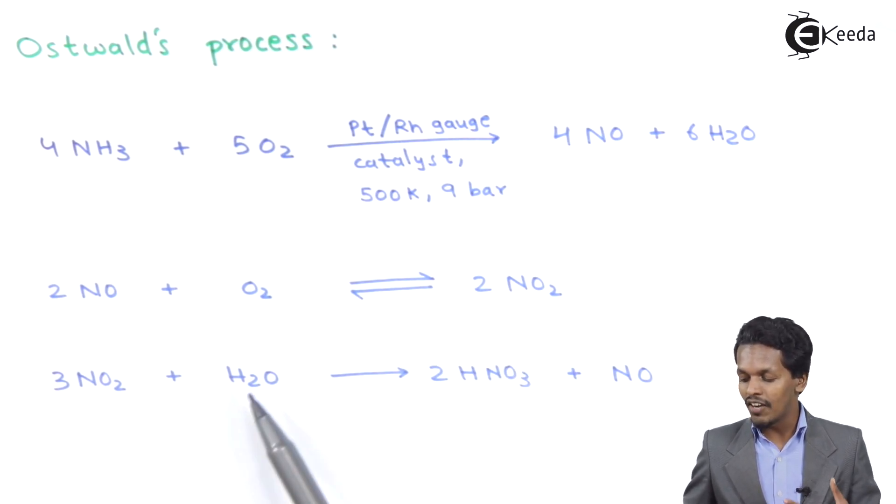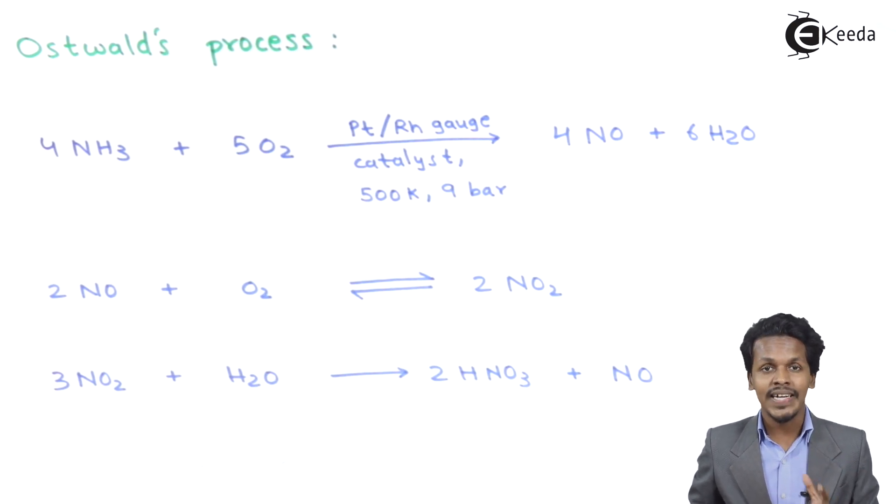This nitrogen dioxide is reacted with water to obtain nitric acid, HNO3, along with NO. This is the method where we can prepare nitric acid in large scale. The nitric acid obtained is 68% by weight. Because of other impurities also present, like nitrogen dioxide, this is known as fuming nitric acid.